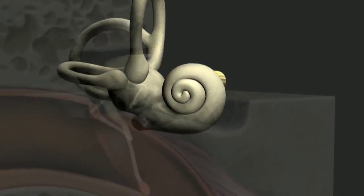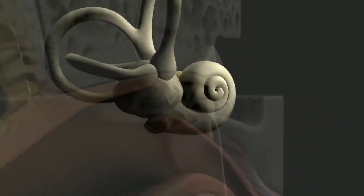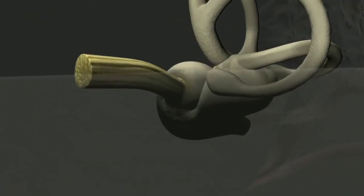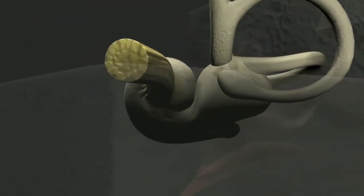The cochlea appears as a coiled tube in the shape of a snail shell, with between two and a half and two and three quarter turns. It is wrapped around the acoustic portion of the auditory nerve.